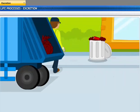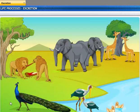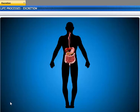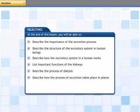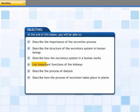All cities have a garbage disposal system in place to maintain clean and hygienic living conditions. Similarly, all living organisms use some kind of mechanism to eject wastes from their bodies. In this lesson, we will take a closer look at the waste disposal strategies used by various organisms. This lesson is about the process of excretion in different types of organisms. At the end of this lesson, you will be able to describe the importance of the excretion process, describe the structure of the excretory system in human beings, describe how the excretory system in a human works, and list important functions of the kidneys.